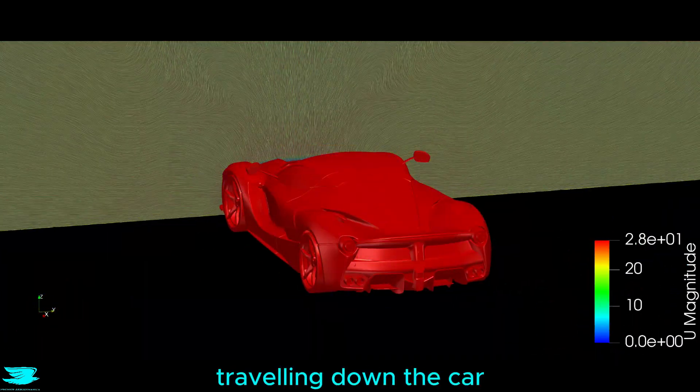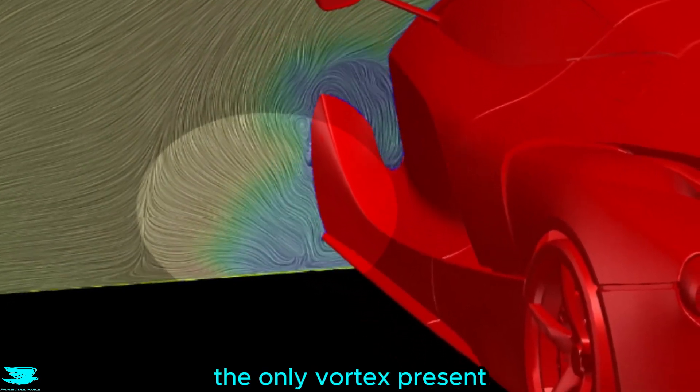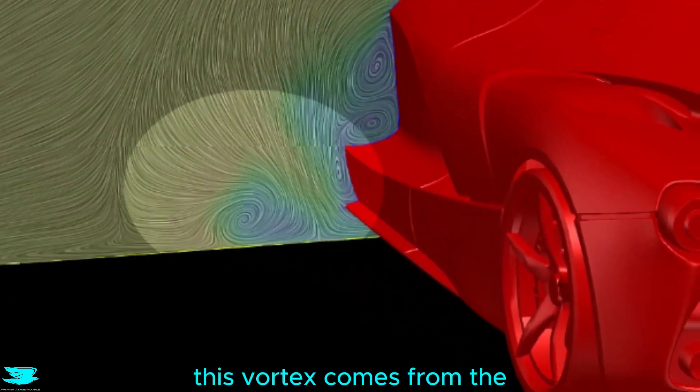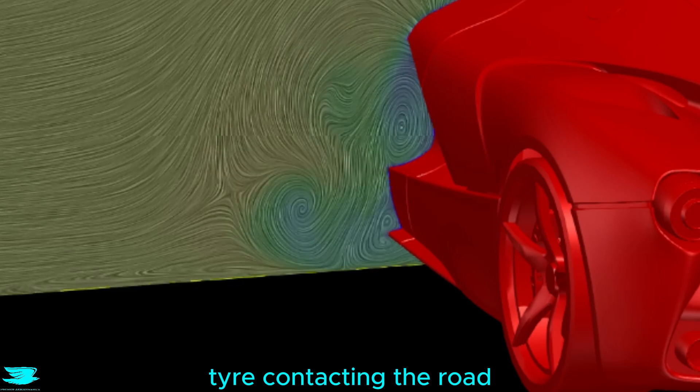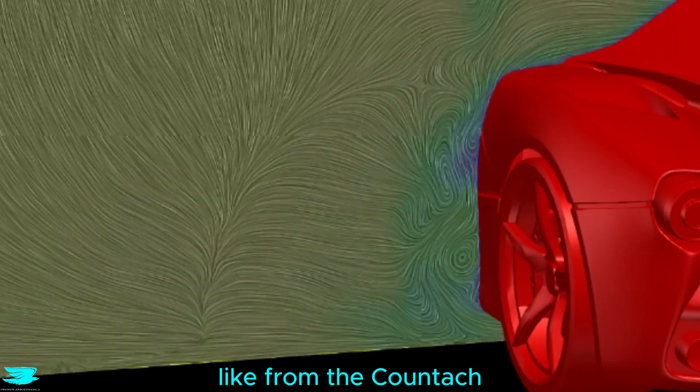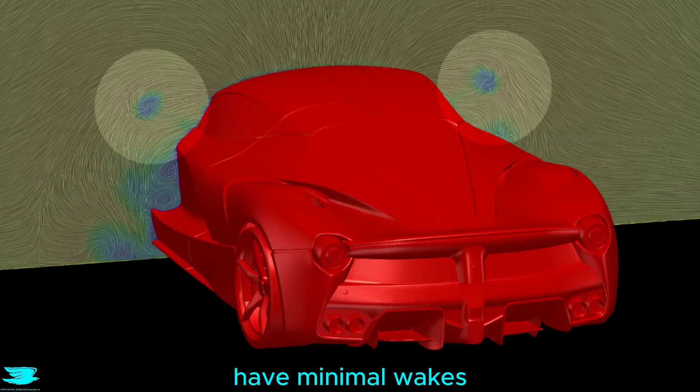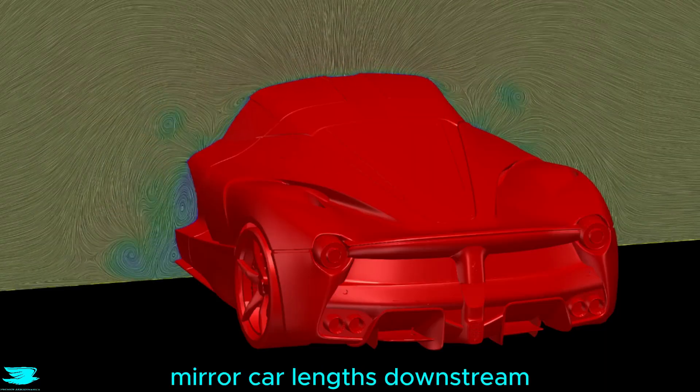Looking at this plane travelling down the car, we see something truly remarkable. Behind the front wheel, the only vortex present is the jetting vortex. This vortex comes from the tyre contacting the road, and can't really be helped. But all the other vortices you might see, like from the Countach, don't exist here. Even the side mirrors have minimal wakes, dying out only a few mirror car lengths downstream.